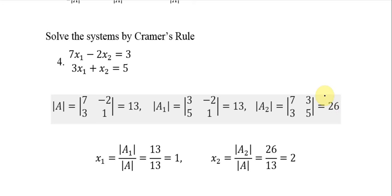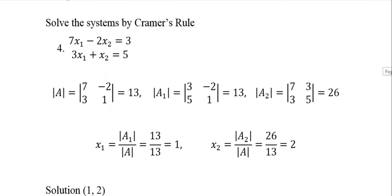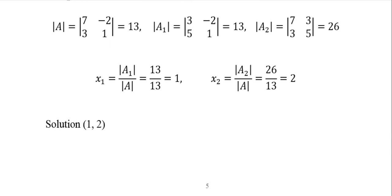And so Cramer's Rule says, once you have all these determinants, then you can easily get the answer. X sub 1 is the determinant of A sub 1 divided by the determinant of A, so we just get 1. And then X sub 2 is the determinant of A sub 2 divided by the determinant of A, and that just gives us 2.